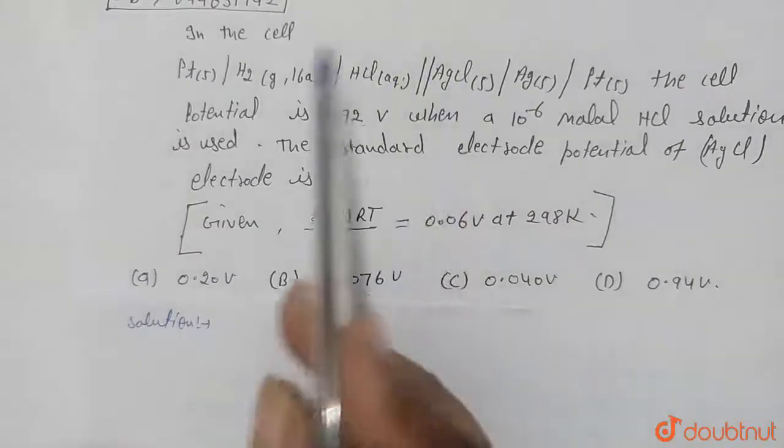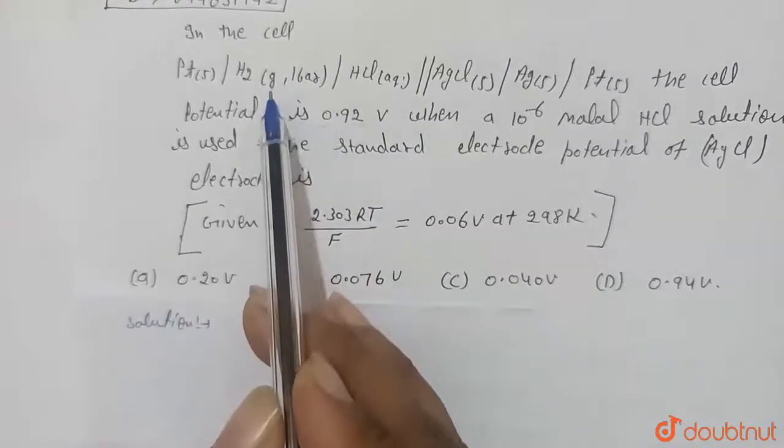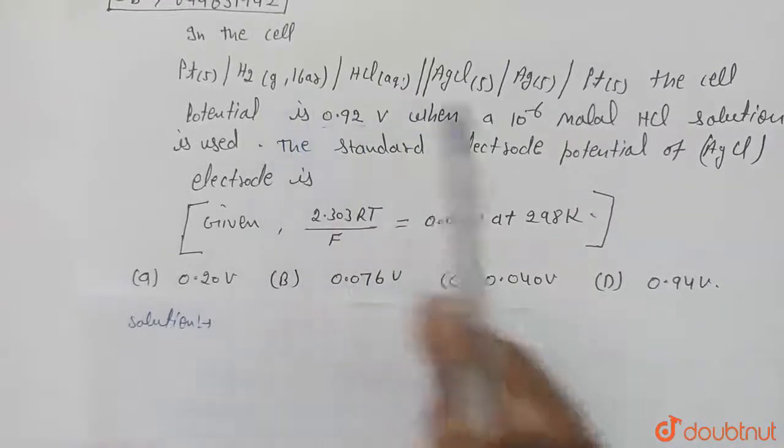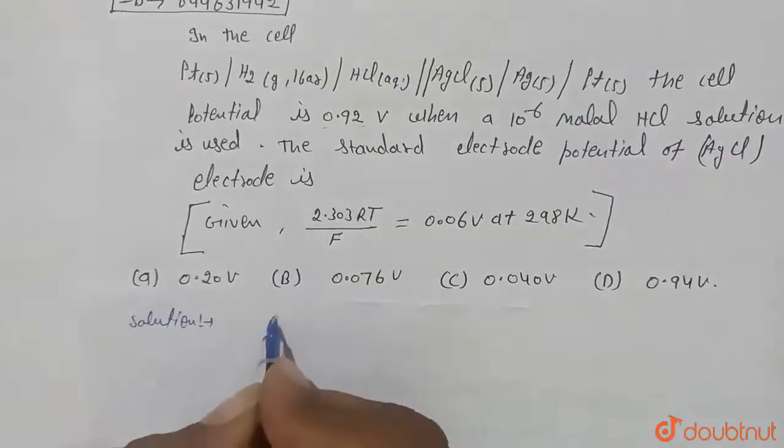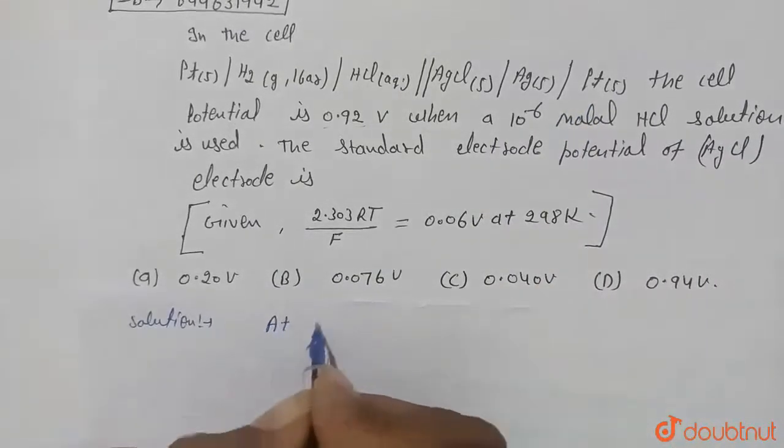According to cell representation, here left side will be used as anode and the right side will be used as cathode. Now at anode, oxidation will take place.